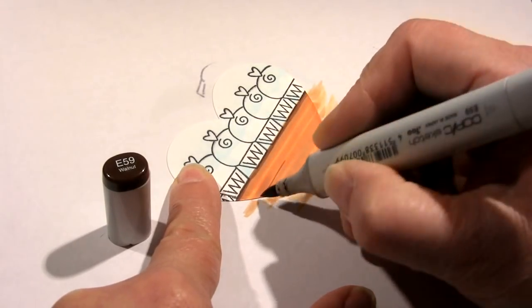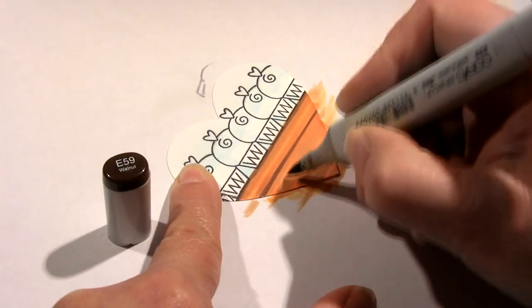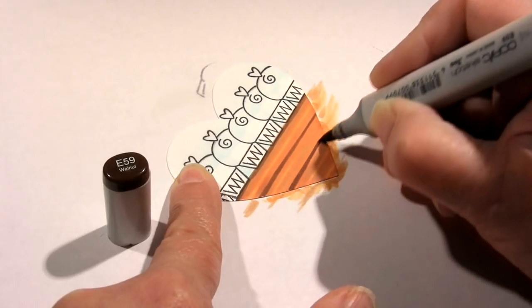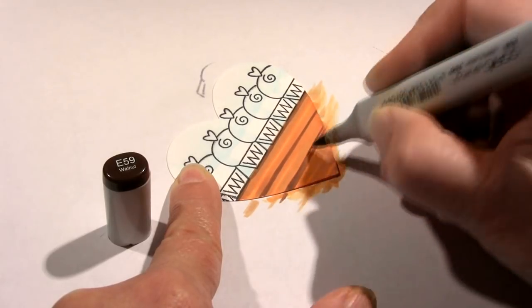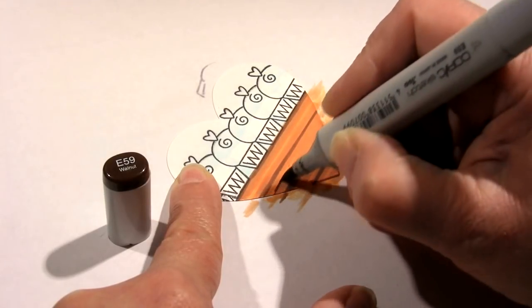This E59 is going to be a nice dark color to add the cracks in the wood, and those I want to be a little bit thicker so they show up really nice. They don't have to be straight, so don't worry about really getting too fussy with it.